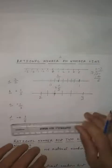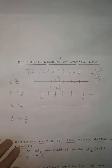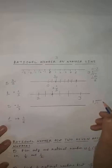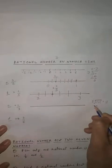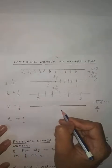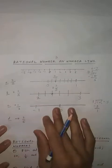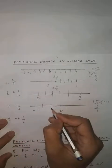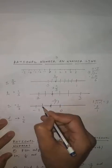Now minus 1 by 3 is given. First draw a number line. You have to check between which two numbers this will exist. Since it is 0.33, the number line exists between 0 and 1, but it has a negative sign, so it is between 0 and minus 1. Denominator is 3, so you will divide into 2 parts. You have to find minus 1 by 3, so this is minus 1 by 3, this is minus 2 by 3, and this is minus 3 by 3.